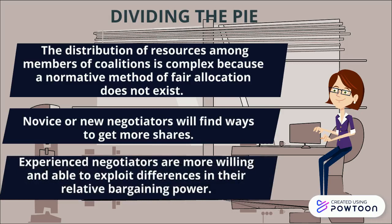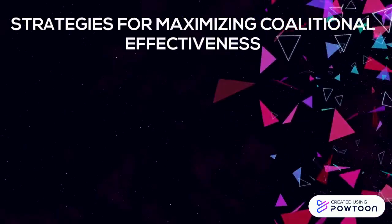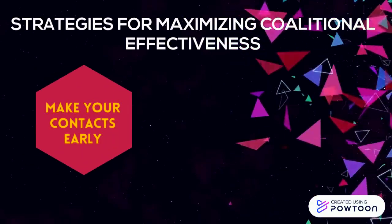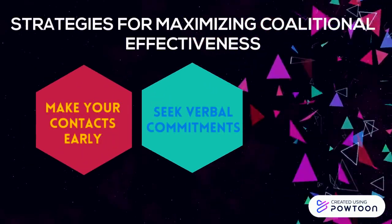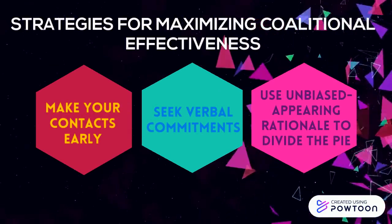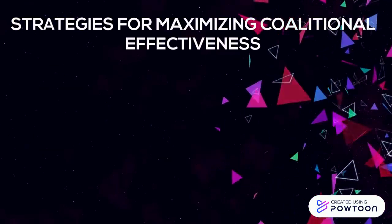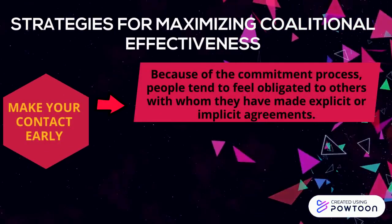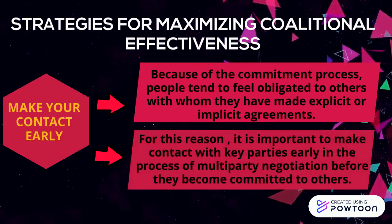Strategies for maximizing coalition effectiveness: make your contacts early and use verbal commitments. Regarding making contact early — because of the commitment process, people tend to feel obligated to others with whom they have made explicit or implicit agreements. It is important to make contact with key parties early in multi-party negotiation, before they become committed to others.